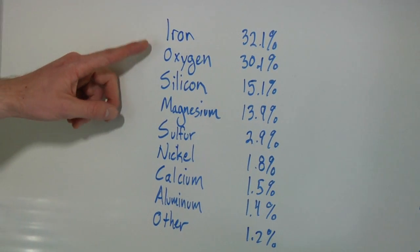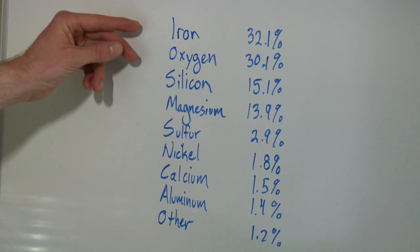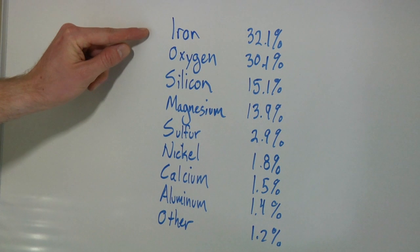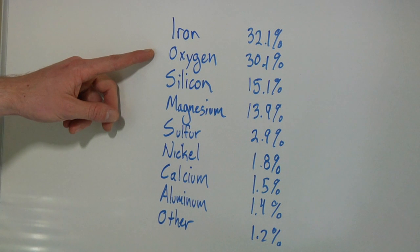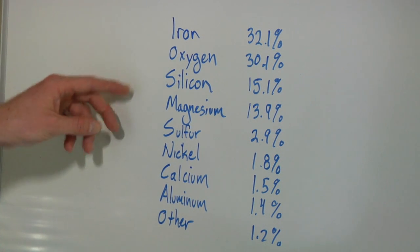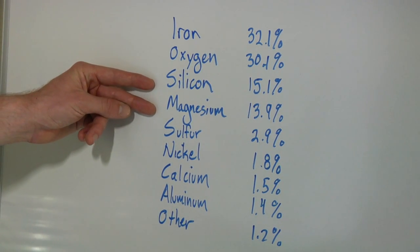You'll notice that the first two, iron and oxygen, make up roughly 30% each. Iron is the most abundant at 32.1%. Then you have oxygen, which is 30.1% of the entire composition of Earth. The next two are silicon and magnesium. They're roughly around 15%. Silicon is 15.1% and magnesium is 13.9%.